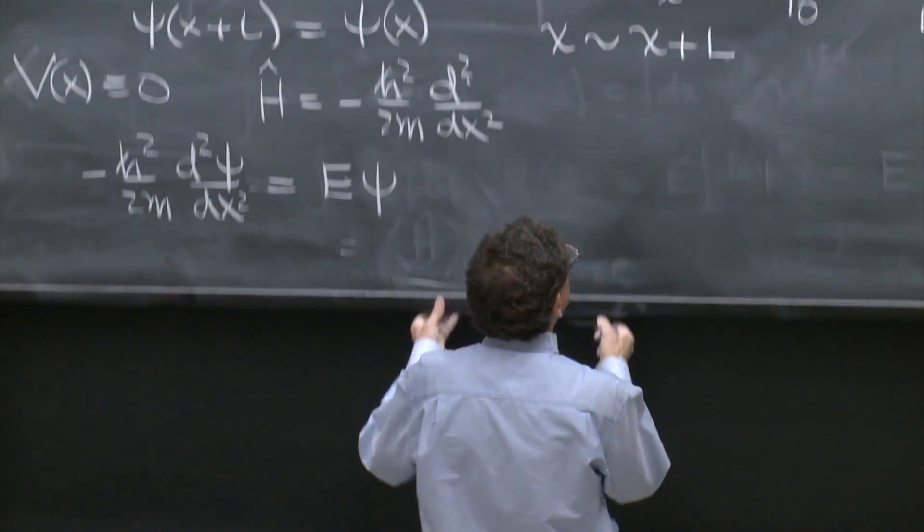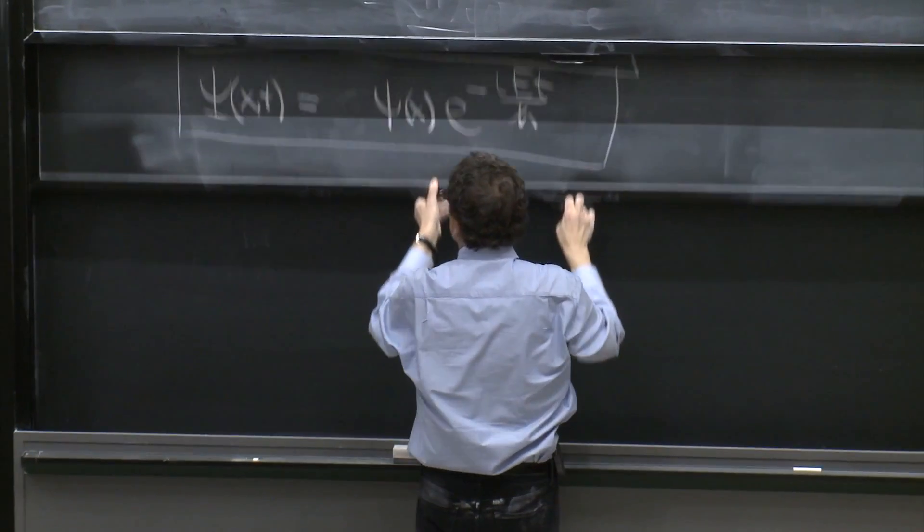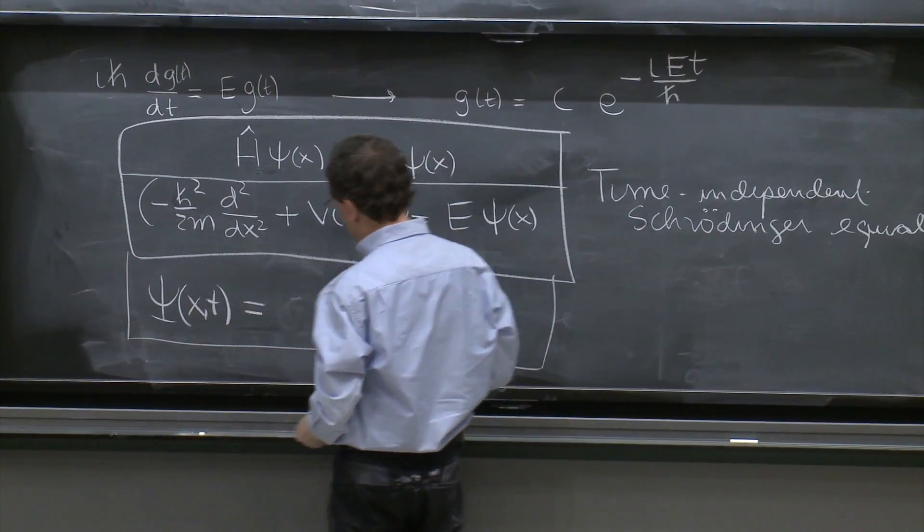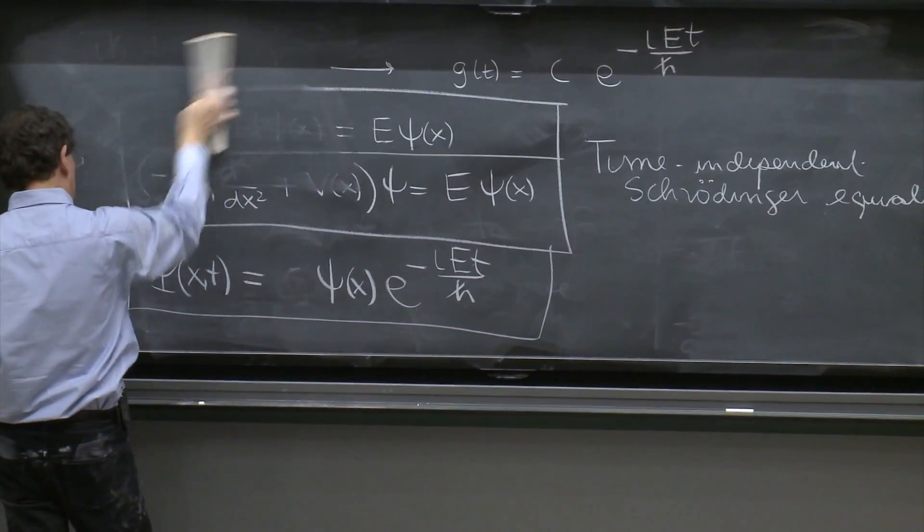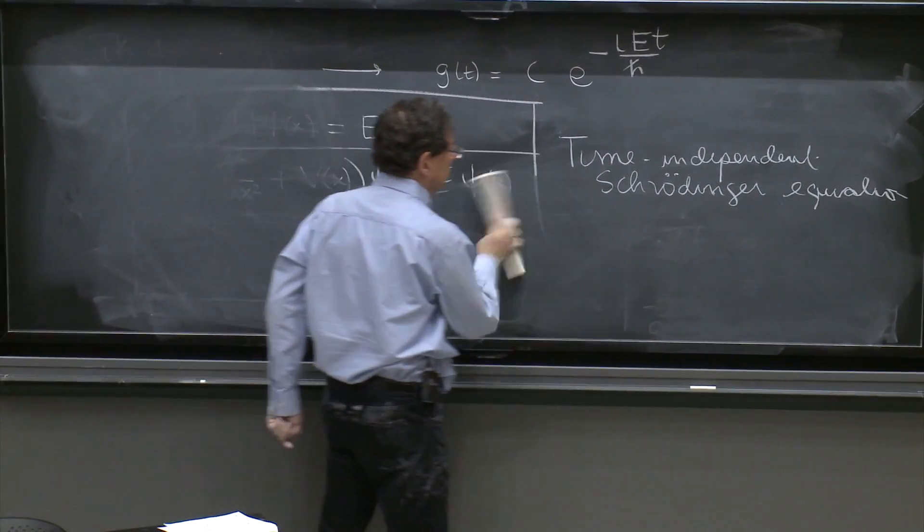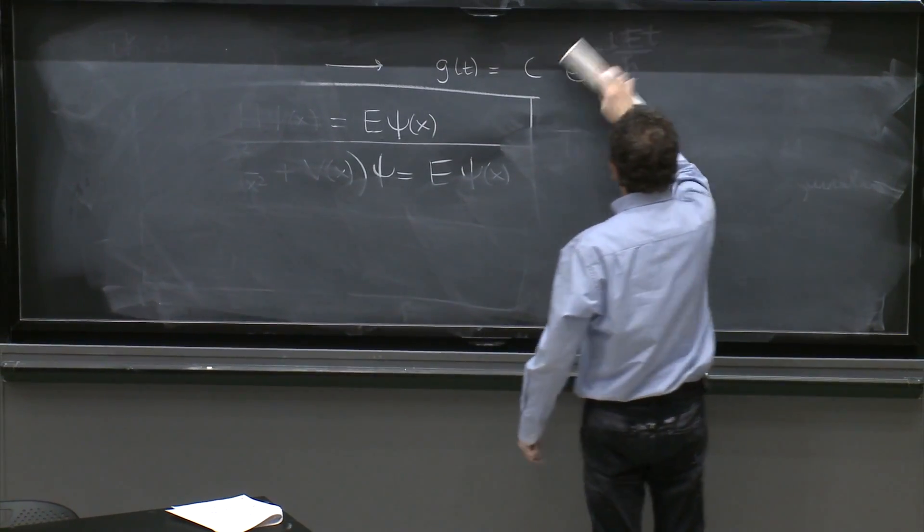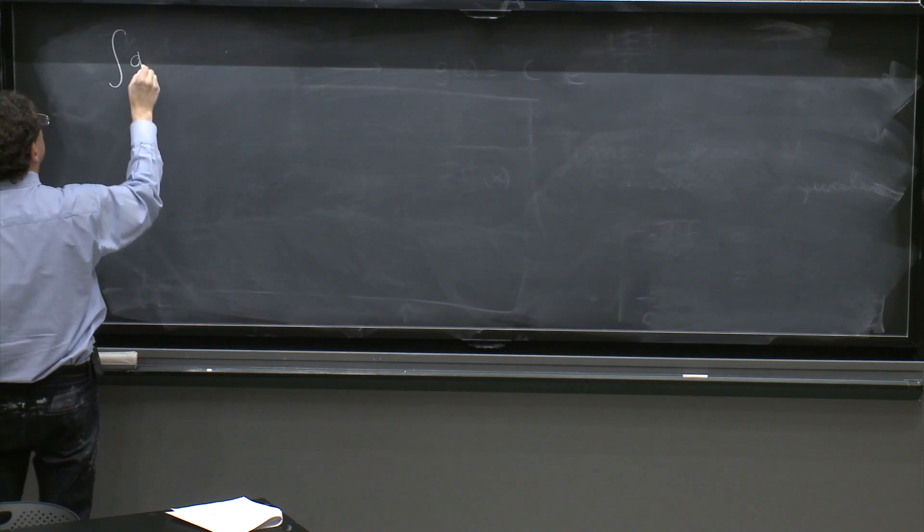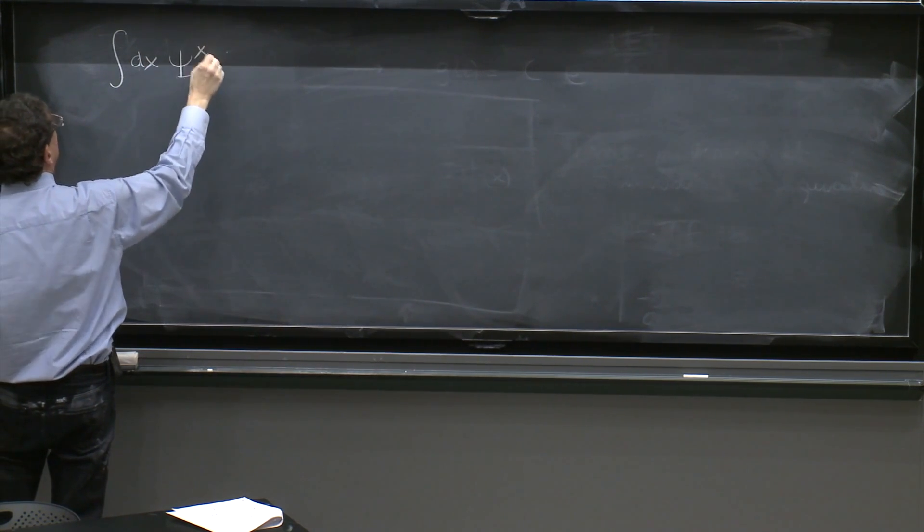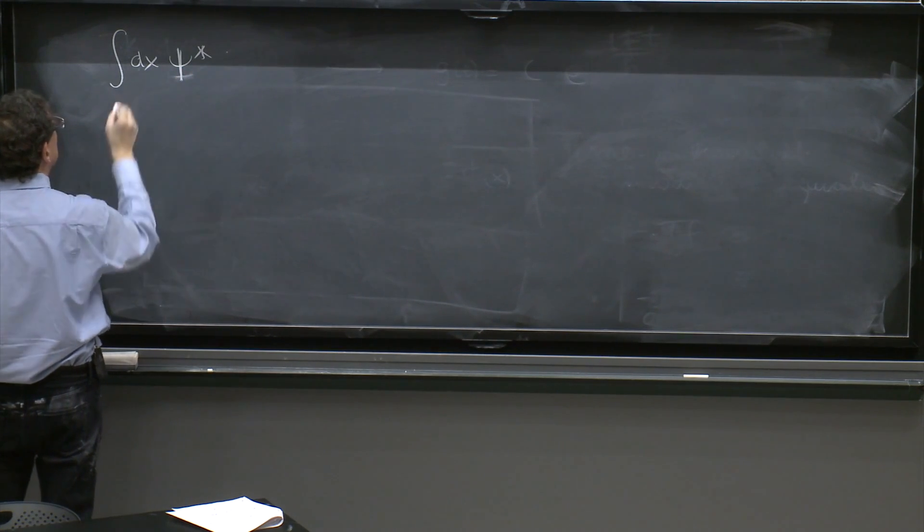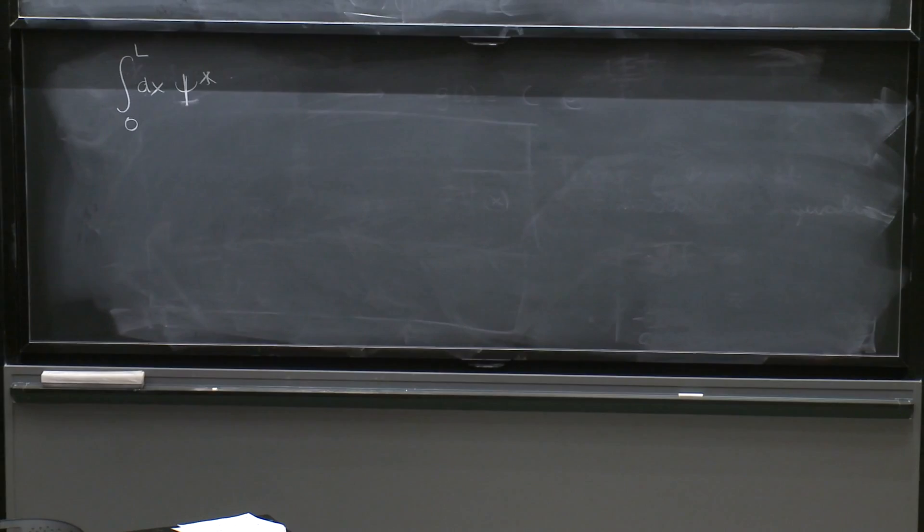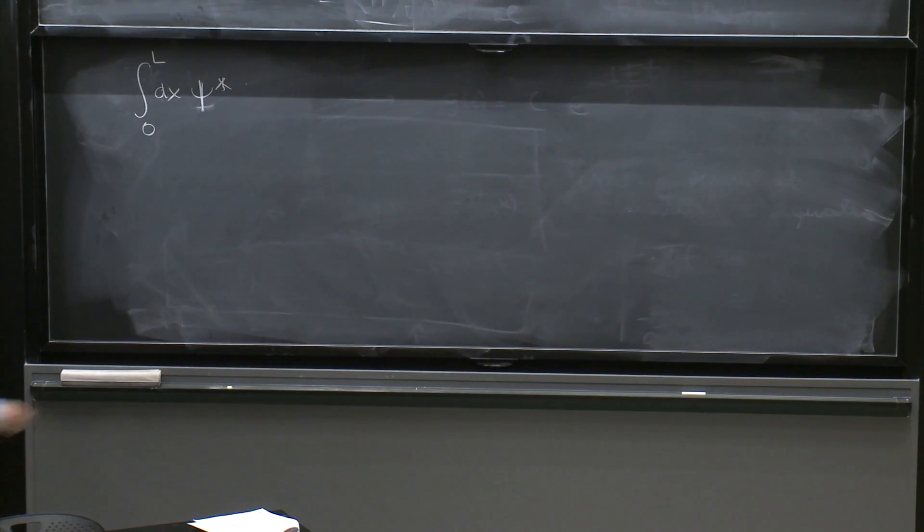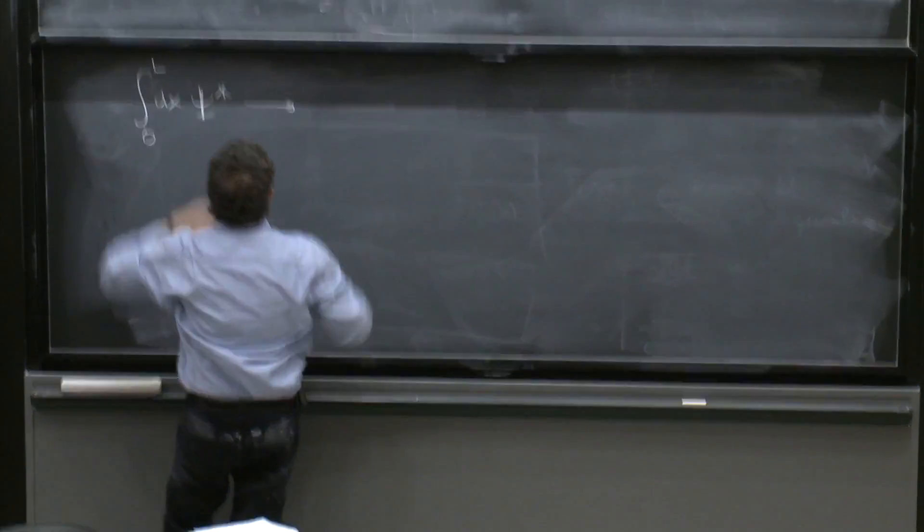Now, it's relatively simple to show that all the energies that you can find are either zero or positive. It's impossible to find solutions of this equation with negative energies. And we do it as follows: we multiply by dx and ψ star and integrate from 0 to L.